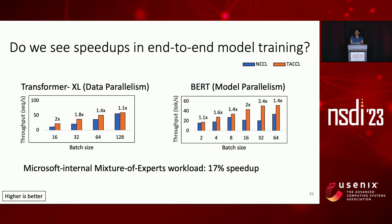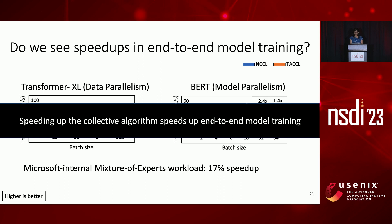Next, we answer the question: do faster collective algorithms actually improve end-to-end performance of distributed ML? We replace NCCL with Tackle's backend using a single import line change and register Tackle's algorithms in the popular implementations of TransformerXL and BERT in PyTorch. For both models on two Azure NDV2 nodes, we see 10% to up to 2.4x speedup for varying batch sizes. We also run a Microsoft internal mixture-of-experts workload using Tackle's all-to-all and all-reduce algorithms and obtain a 17% speedup over NCCL. Speeding up collective algorithms speeds up end-to-end model training.